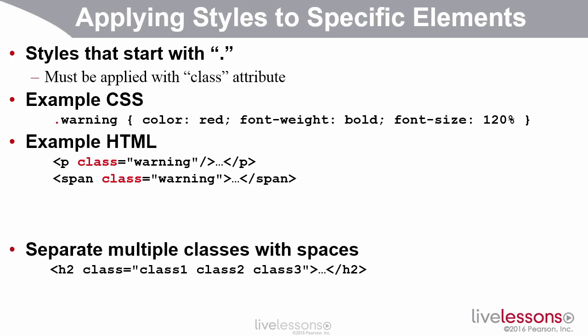More commonly, you apply styles to specific elements. In your CSS file, you start the style with a dot. So rather than h2, you might say dot warning — warning is a name you made up, not an existing HTML element. When you make up the name, in your HTML you apply it using the class attribute. When you write class equals warning, notice there's no dot — the dot is used in the CSS file to distinguish it from an HTML element, but when you use the class attribute you just say class equals warning. This is much more common, so you don't accidentally style things you didn't intend.